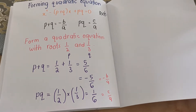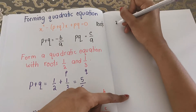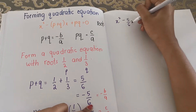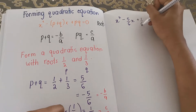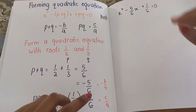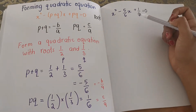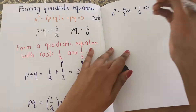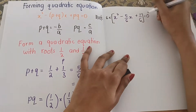Now we can write our quadratic equation. We write it as x² minus 5/6 x plus 1/6 equals 0. As you can see, we have it in fraction form. So what if we eliminate the fraction? We multiply the entire equation by 6.